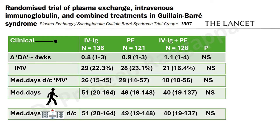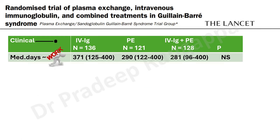The easiest approach in most hospitals is to give IVIG as first choice because of the ease of administration. Plasma exchange requires placing a dialysis catheter and involves a lot more logistics.